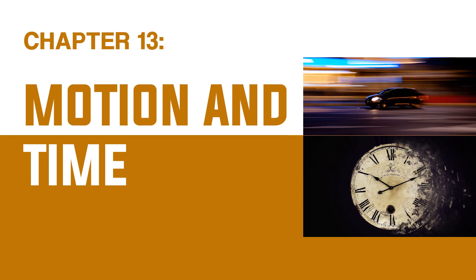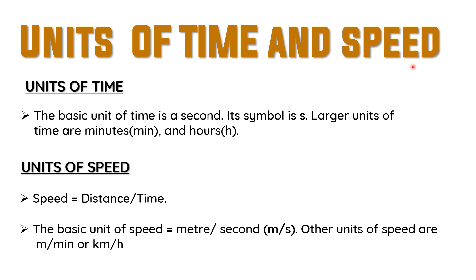First we will see units of time. The basic unit of time is a second, and its symbol is the small letter 's'. Larger units of time are minutes, represented as 'min', and hours, represented as 'h'. Note that 'min' not 'mins', and 'h' not 'hrs' — those are wrong.